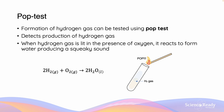The formation of hydrogen gas is tested using the POP test. The POP test is a simple test which detects the production of hydrogen gas. When hydrogen gas is lit in the presence of oxygen, it reacts to form water, producing a squeaky sound. The reason this produces that sound is because it is a highly energetic process — so delta H is large.